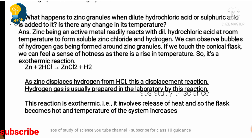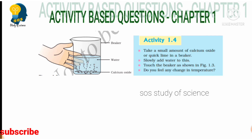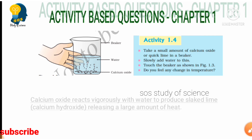Now let us look at Activity 1.4. Take a small amount of calcium oxide — also called quicklime, formula CaO — in a beaker. To this, we add cold water (note: cold water, not hot water). Observe what happens when water is added to calcium oxide.